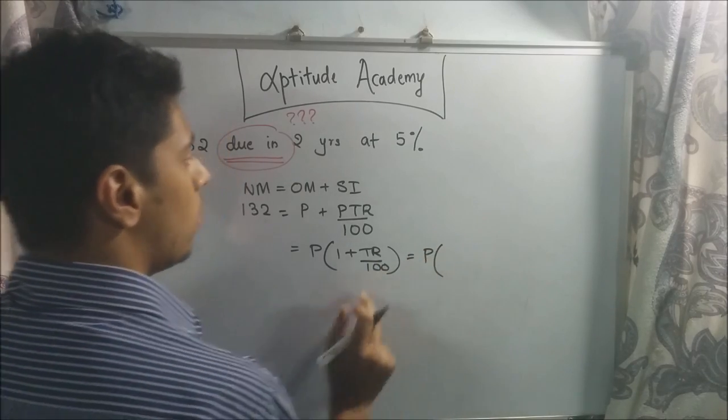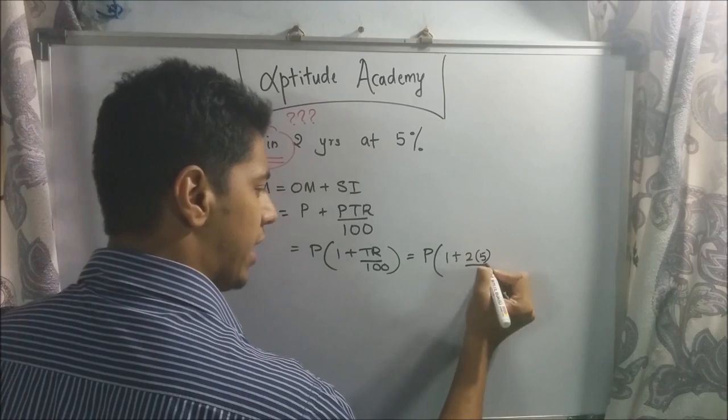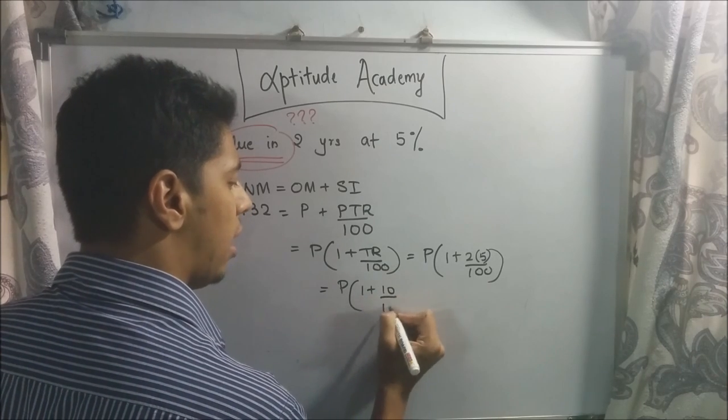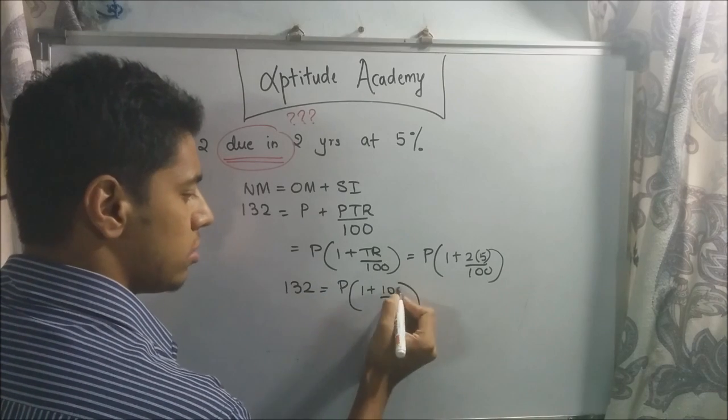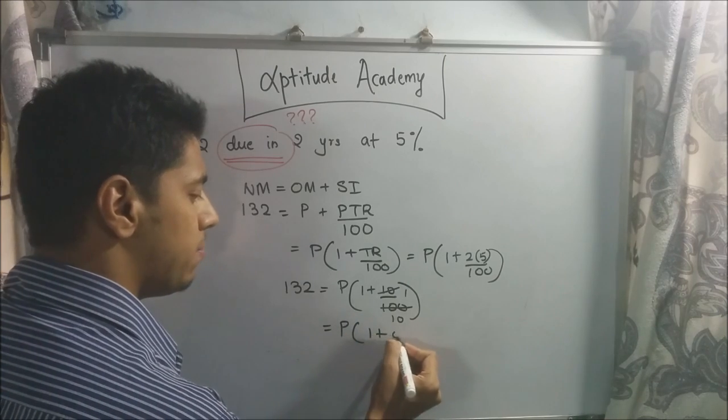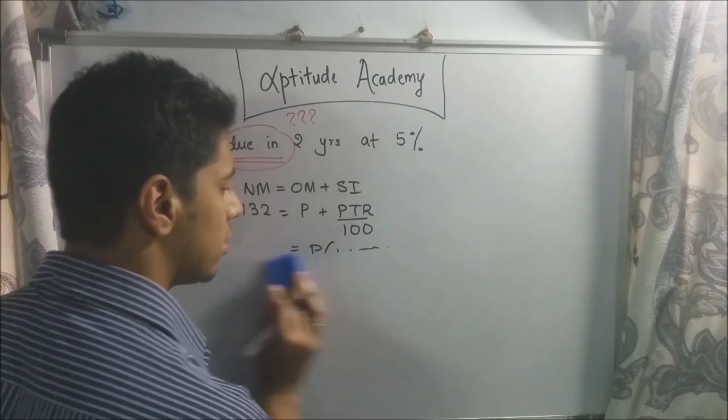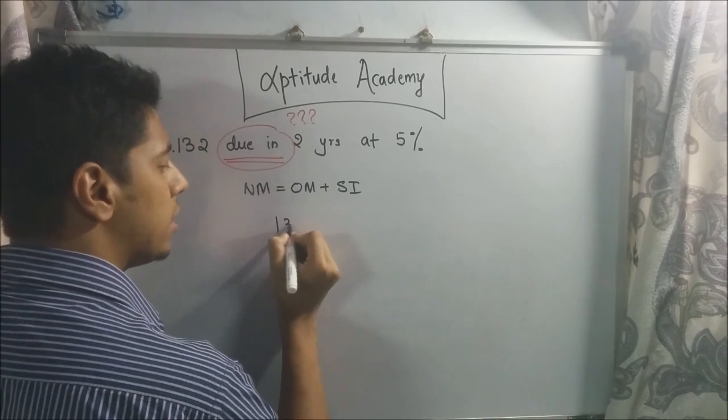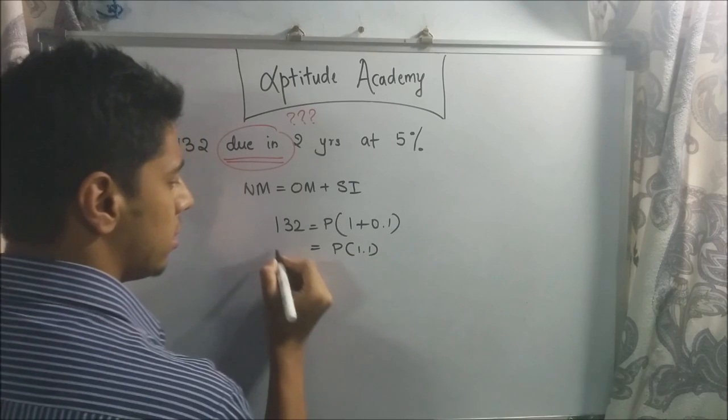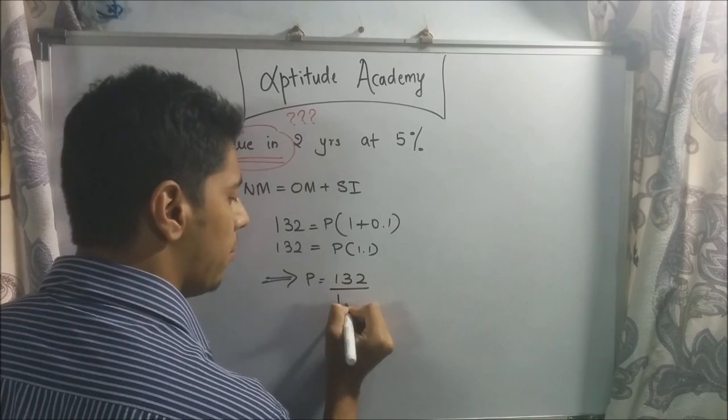This is still 132. So 10 ones are, 10 tens are. So this is P times 1 plus 0.1. 1 by 10 is 0.1. So this is 132. Now, I'll just erase it a little bit. So we were at this step. 132 equals P into 1 plus 0.1. So it's equal to P into 1.1. Implies P equals 132 divided by 1.1.